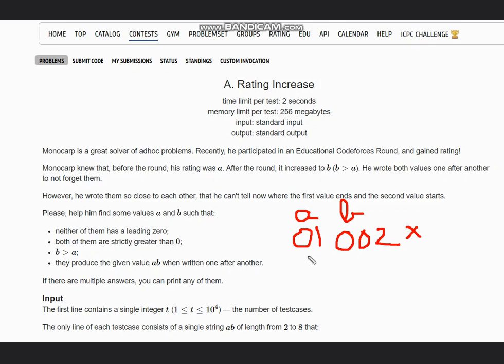Both of them are strictly greater than zero, so they can't be zero or negative. Both of these can't be zero. And B must be greater than A, which means if A is 3, B can be 4, 44, 404, or anything. This condition should be satisfied.